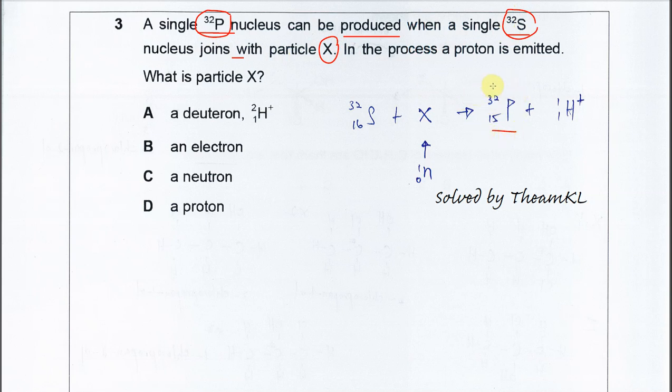And the sulfur and particle X as reactants. The last sentence tells you that in this process a proton is emitted, so the proton is also one of the products. This means at the product side you're going to have phosphorus with the proton.